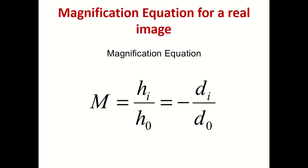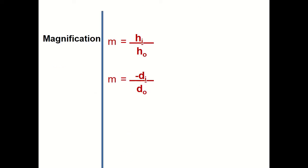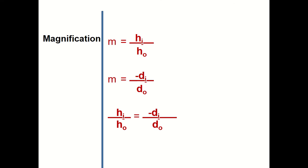Formally, hi means height of the image and ho means height of the object. The magnification equation is hi over ho, and magnification also equals negative di over do. Since both expressions equal magnification, we can set them equal to each other: height of image over height of object equals negative image distance over object distance. We can use that as a tool for solving problems.